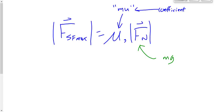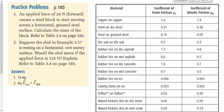We had a couple questions for homework — the practice problems on page 185. Number one says: an applied force of 24 newtons forward causes a steel block to start moving across a horizontal greased surface. What's the mass of the block? The 24 newtons is the force required to get it moving — that's the maximum force of static friction. So F_sf_max equals 24 newtons.